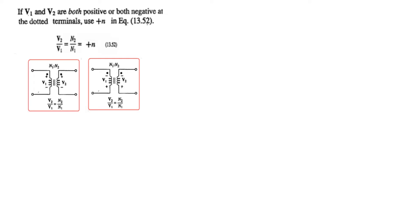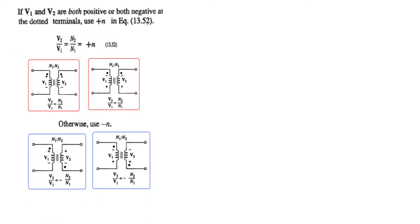When voltages V1 and V2 are both positive or both negative at the dotted terminal — like here both positive at the dotted terminal and here both negative — then the relationship will have a positive sign. But if they are otherwise, that is one positive dot here and negative dot there, then we will have to put a minus sign.